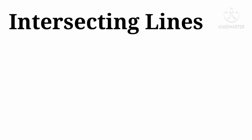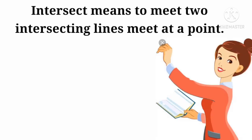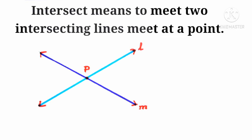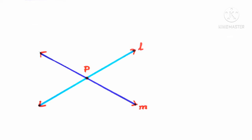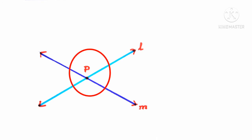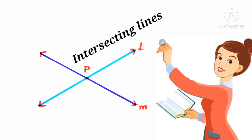What are intersecting lines? Intersect means to meet. Two intersecting lines meet at a point. Look at this figure. In this figure, line L and line M meet at the point P. These type of lines which meet at a common point are called intersecting lines.